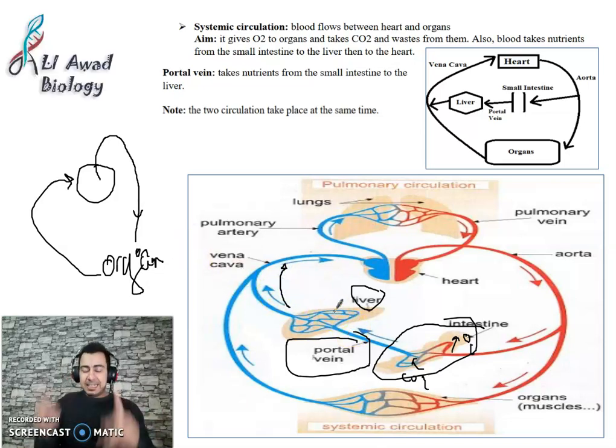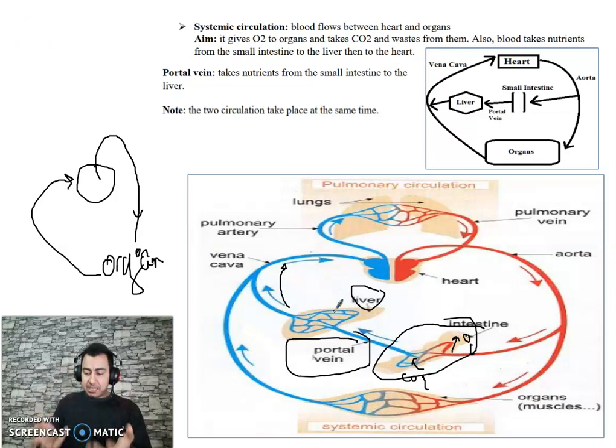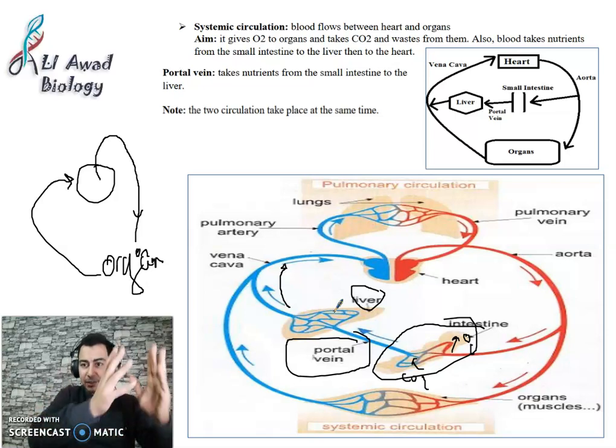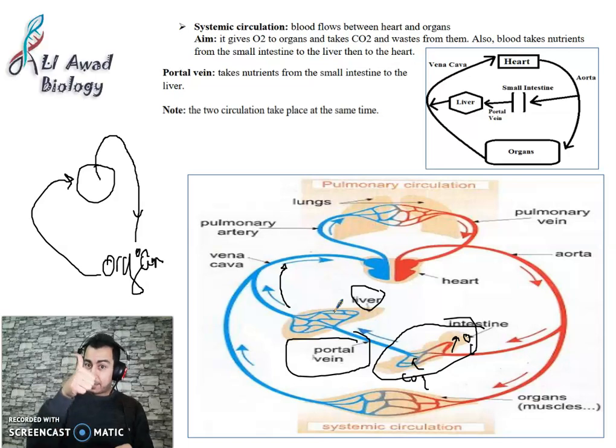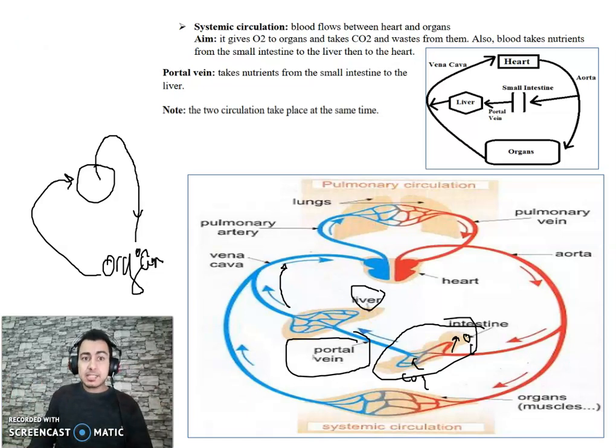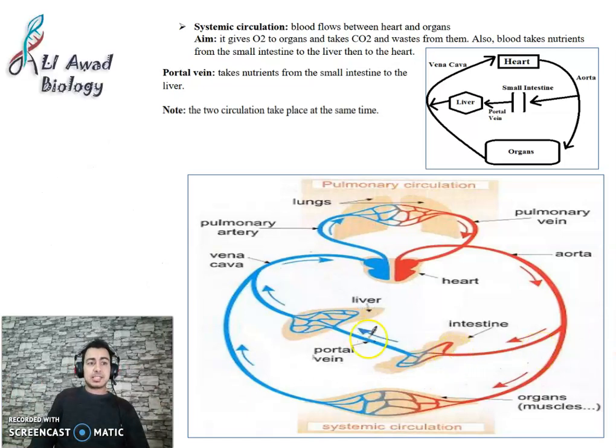All organs of the body, the blood from them goes to the vena cava, except the small intestine. Blood from the small intestine goes to the liver and then returns to the vena cava. Why? Why does the blood go from the small intestine to the liver?